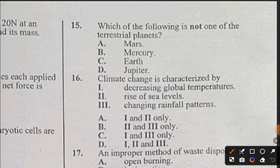Question 15: Each of the following is not one of the terrestrial planets. The answer to question 15 is D, Jupiter. Question 16: Climate change is characterized by: I) decreasing global temperatures - no, II) rise of sea level - yes, III) changing rainfall patterns - that's also true. So II and III, the answer to question 16 is B.